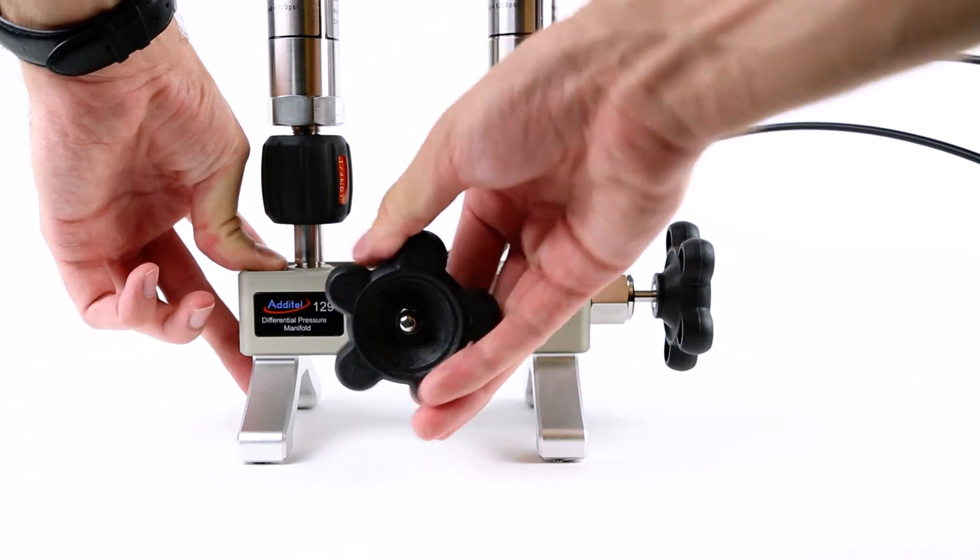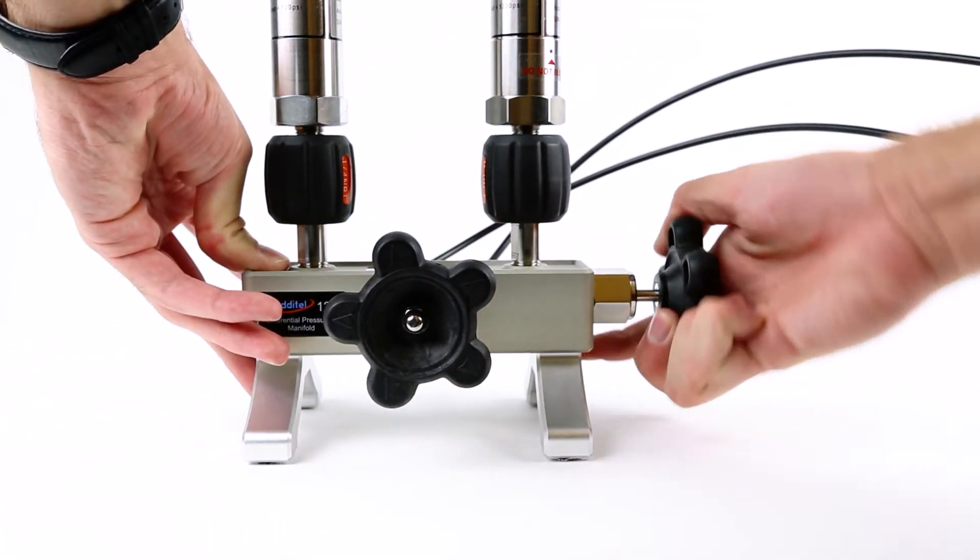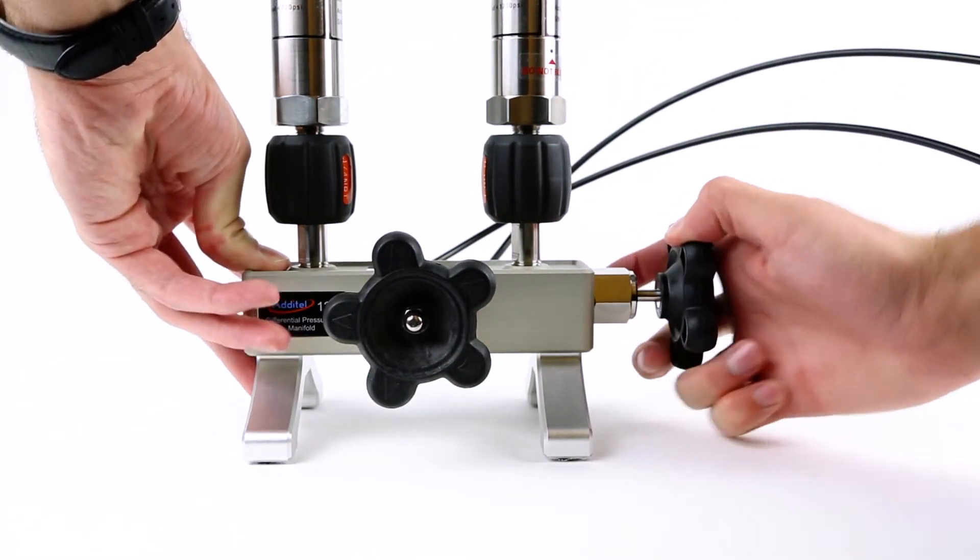When closed, the low line pressure is isolated from the high. The valve on the right will allow for the high pressure line to be applied to the system.